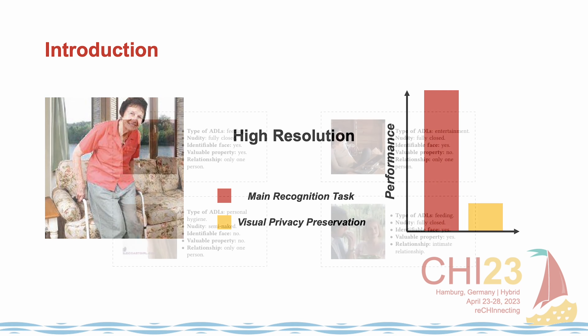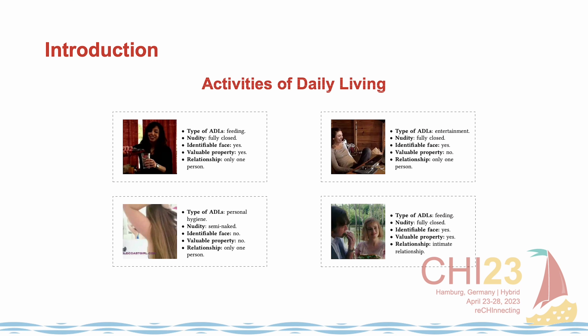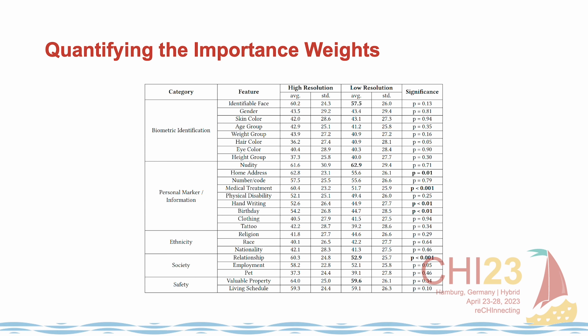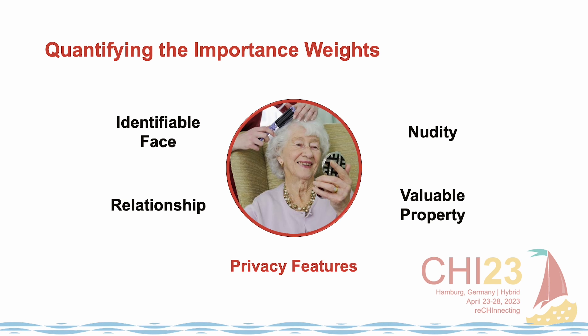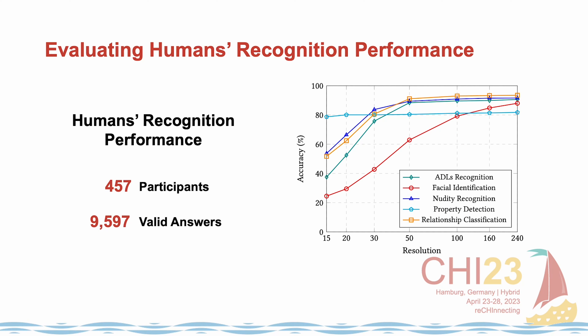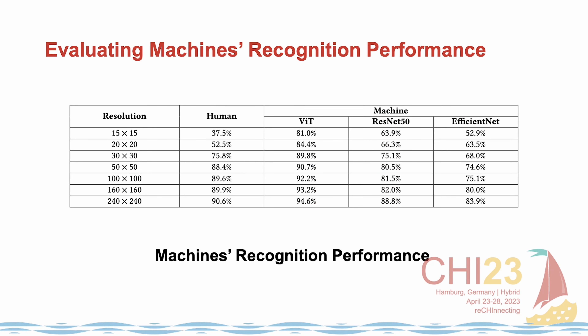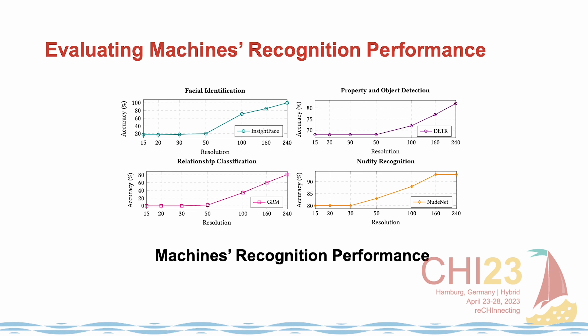Using at-home activities of daily living as a scenario, we obtain the most important privacy features. We analyze the effects of resolution on human and machine performance in activity and privacy awareness tasks.